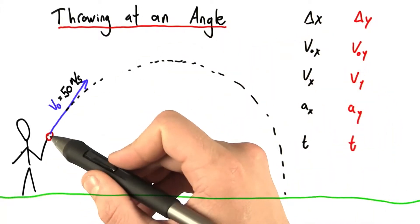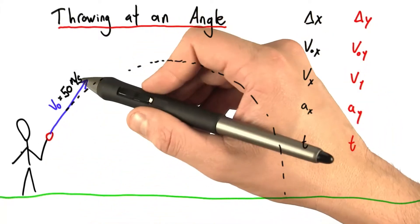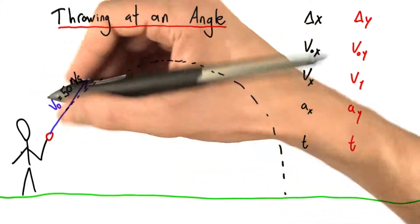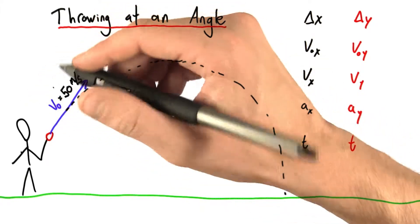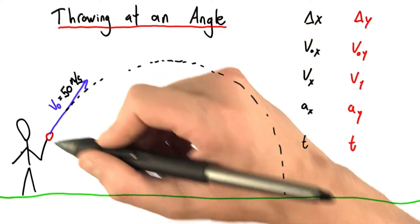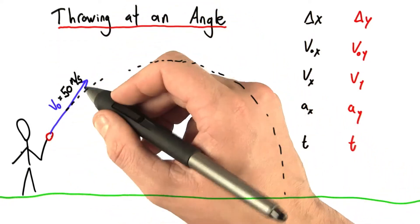Let's consider a problem where I throw a ball with an initial velocity of 50 meters per second. But this time I don't say VOx or VOy, because this is not purely horizontal or purely vertical. It's at an angle.